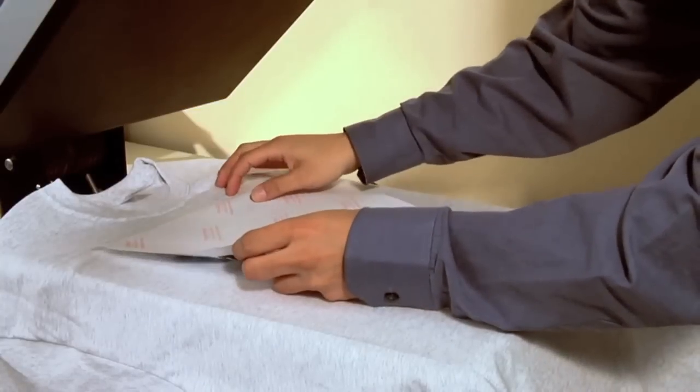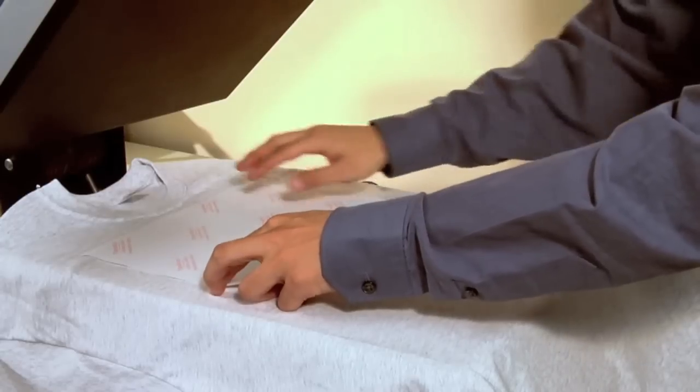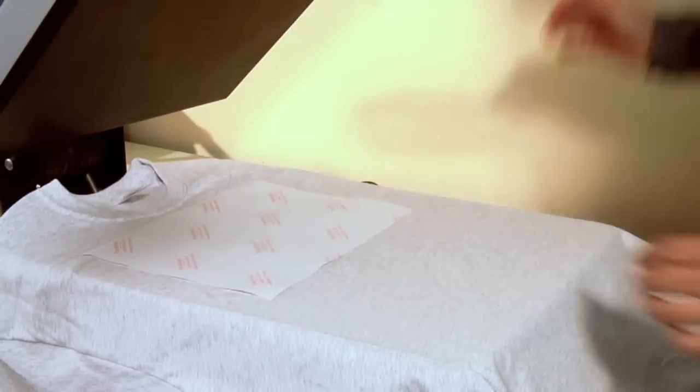After your garment has been pre-pressed, position the printed CL trim free sheet onto the garment and press using heavy pressure. Press for 30 seconds at 330 degrees Fahrenheit.